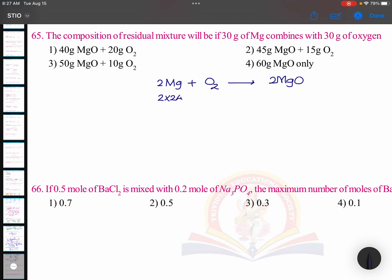2 into 24 grams of magnesium requires 32 grams of oxygen. 2 into 24 means 48 grams. 48 grams requires 32 grams, but here both are given 30 grams only. That means oxygen is going to be a limiting reagent.